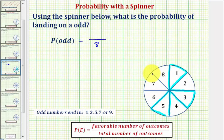Five is odd, so five is favorable, and so is seven. Seven is odd, so seven is favorable. These are the favorable outcomes. Notice how there are one, two, three, four favorable outcomes.